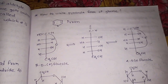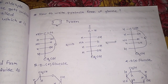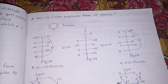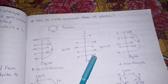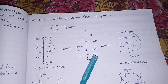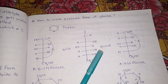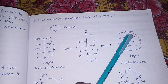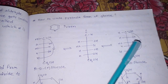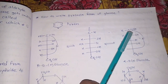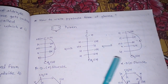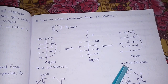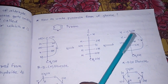From the Fisher formula, we can draw the pyranose structure — alpha-D-glucopyranose and beta-D-glucopyranose. When an aldehyde reacts with an alcohol, it gives a hemiacetal. The OH at the C5 position, O-minus, combines with the carbonyl carbon C-plus, because the carbonyl carbon has a partial positive charge and that oxygen is negatively charged — that's how the hemiacetal is formed.